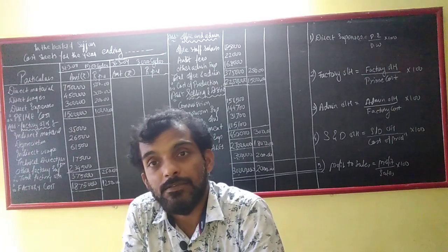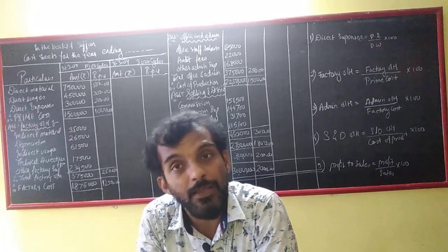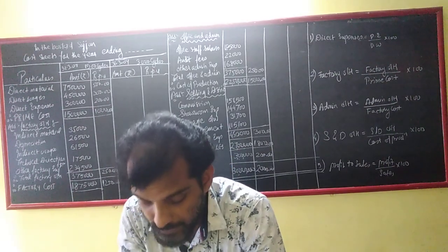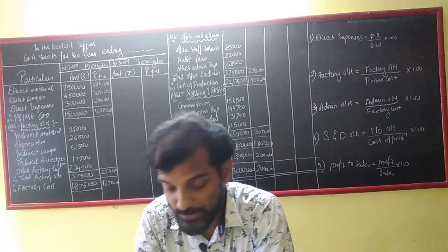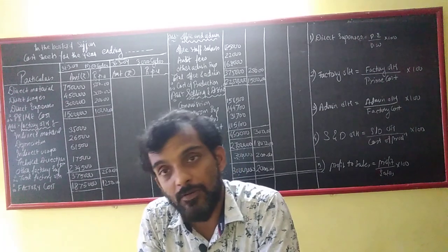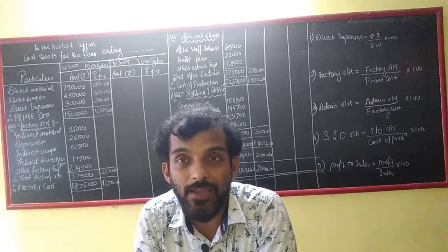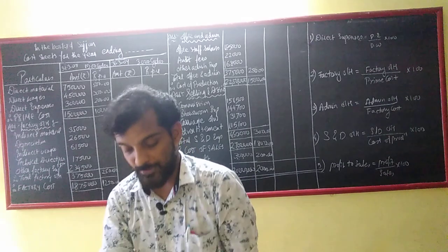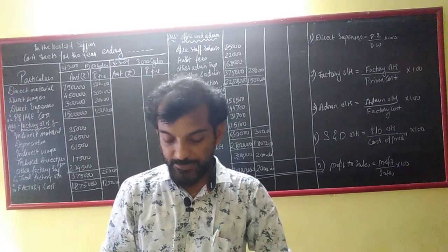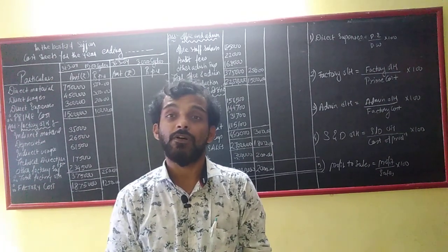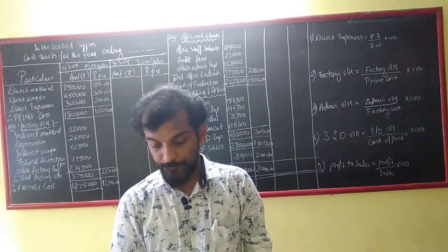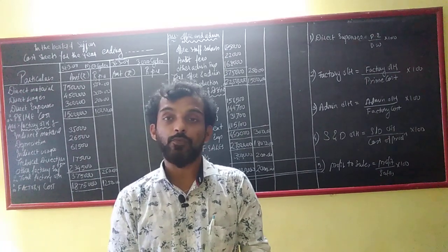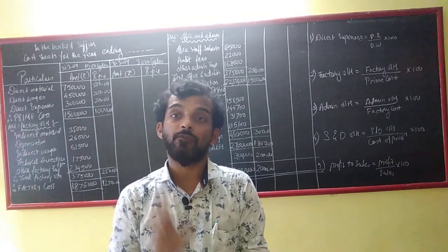Commission to salesman — Selling and distribution expenses. Audit fees — Office and admin. Staff salaries — Office and admin. Showroom expenses — Selling and distribution. Carriage outwards — Selling and distribution. Advertisement — again Selling and distribution. Preliminary expenses and Provision for tax — these are items of Financial Accounts, not Cost Accounts. They have nothing to do with your production activities and hence they are ignored for the cost sheet.